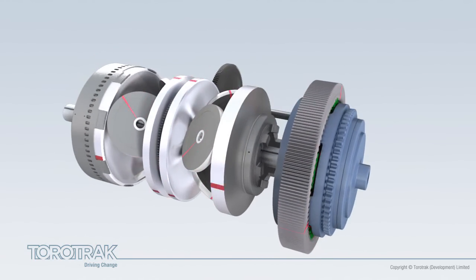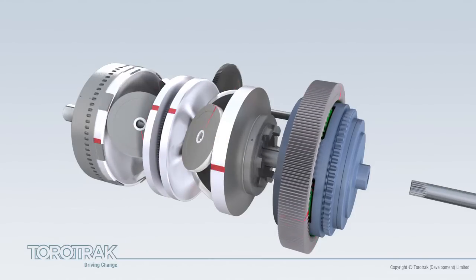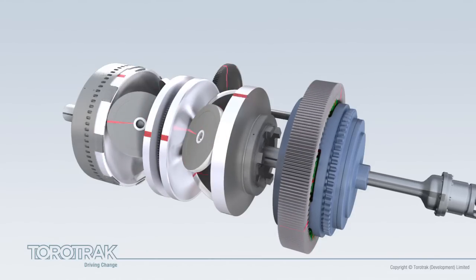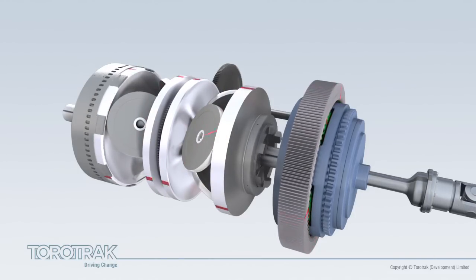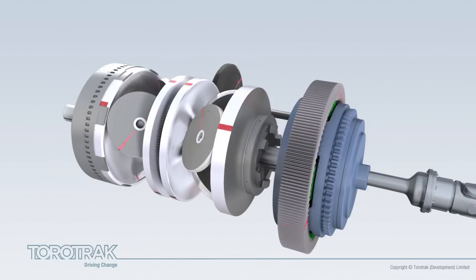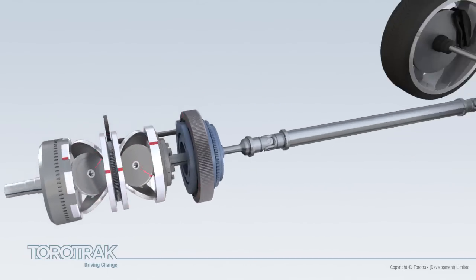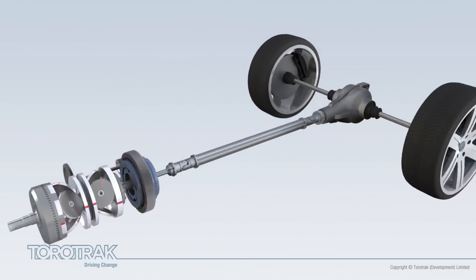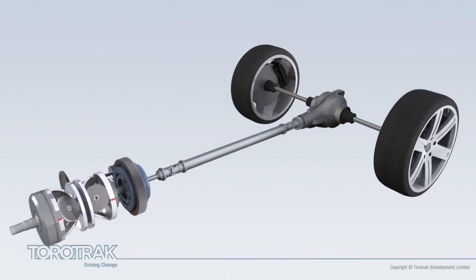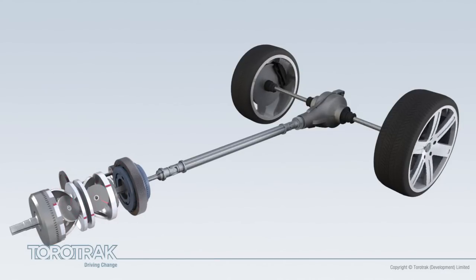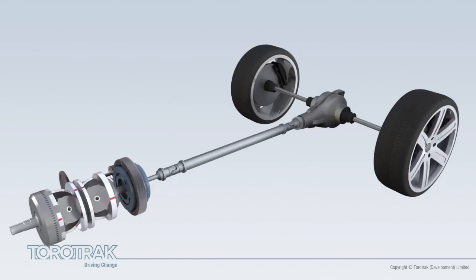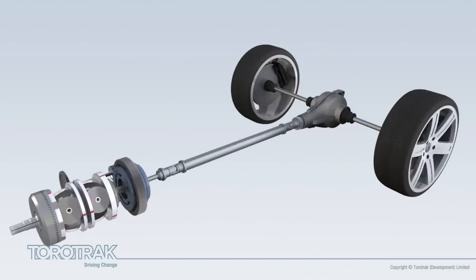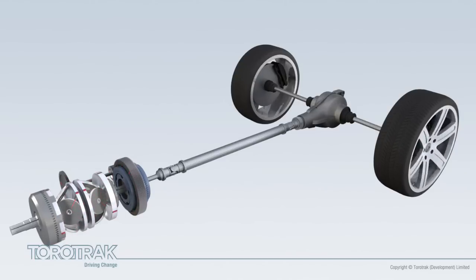The prop shaft is connected to the transmission output via the carrier plate and associated gearing. The variator ratio determines the driveline ratio, causing the transmission to move seamlessly from full reverse through geared neutral to forwards.